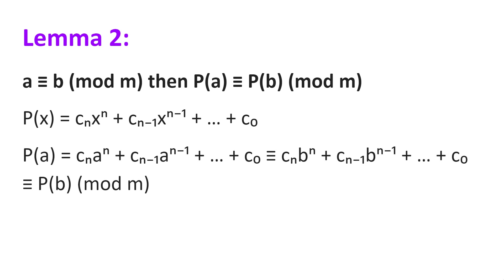Then p(a) = c_n·a^n + c_(n-1)·a^(n-1) + ... + c_0, which equals p(b), and so we have that p(a) is congruent to p(b) modulo m.